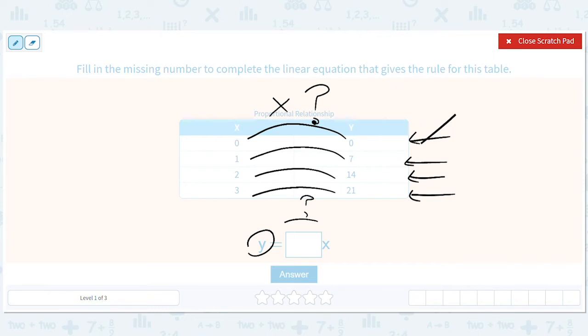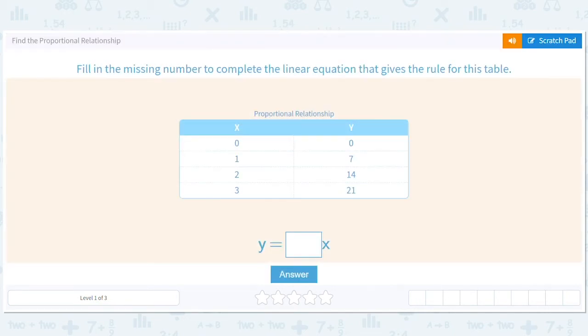But y equals 7 times 1, 14 equals 7 times 2, and 21 equals 7 times 3, right? So you could actually just even look at this one and say, oh, it's going to be 7. y equals 7 times x.